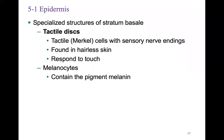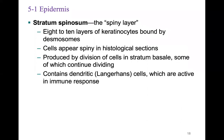Within the stratum basale, you will also find the melanocytes — the cells that contain the pigment melanin. The stratum spinosum is the spiny layer, consisting of eight to ten layers of keratinocytes bound by desmosomes. They are produced by division of cells from the stratum basale, some of which continue to divide in the stratum spinosum. They contain Langerhans cells, which are active in immune responses as resident phagocytic cells.